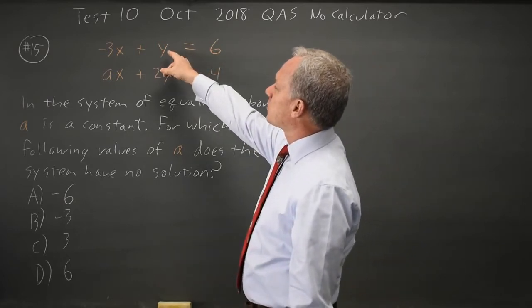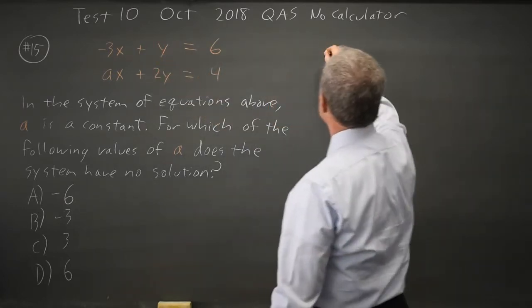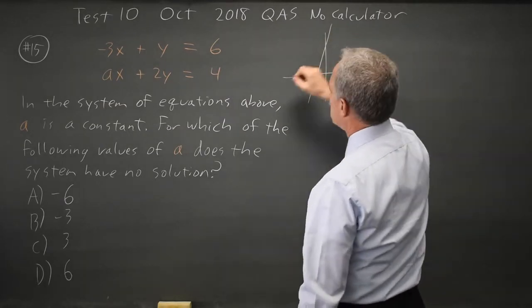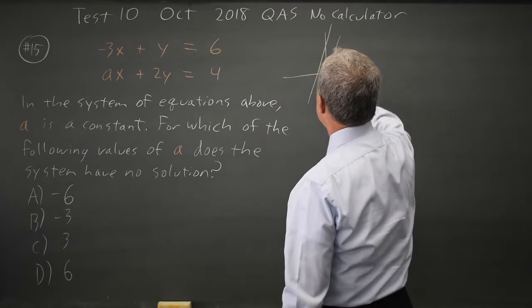Since this is the same as y equals 3x plus 6, which looks something like that, this one will have to be parallel, same slope.